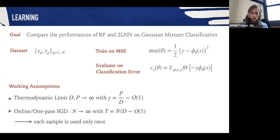Our goal is going to be to compare the random feature model and two-layer neural networks on the Gaussian mixture dataset. We're going to be given a dataset with samples and labels, we're going to train on the mean squared error but then evaluate the performances on the classification error. Our working assumptions will be the typical thermodynamic limit in which both the input dimensions and the number of features are sent to infinity with the ratio kept fixed, and also we'll be using one-pass stochastic gradient descent where each sample is used only once in the training procedure.